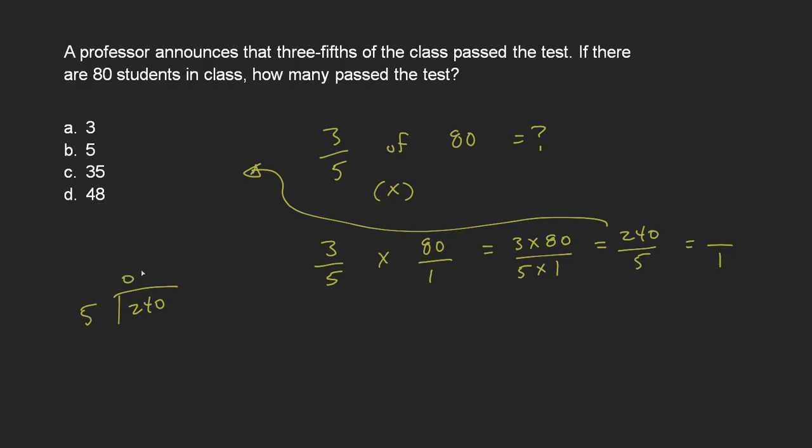Five goes into 24, four times. Four times five is 20. This leaves a remainder of four. Five doesn't go into four. But I can bring this down to get 40. Five goes into 40 eight times.